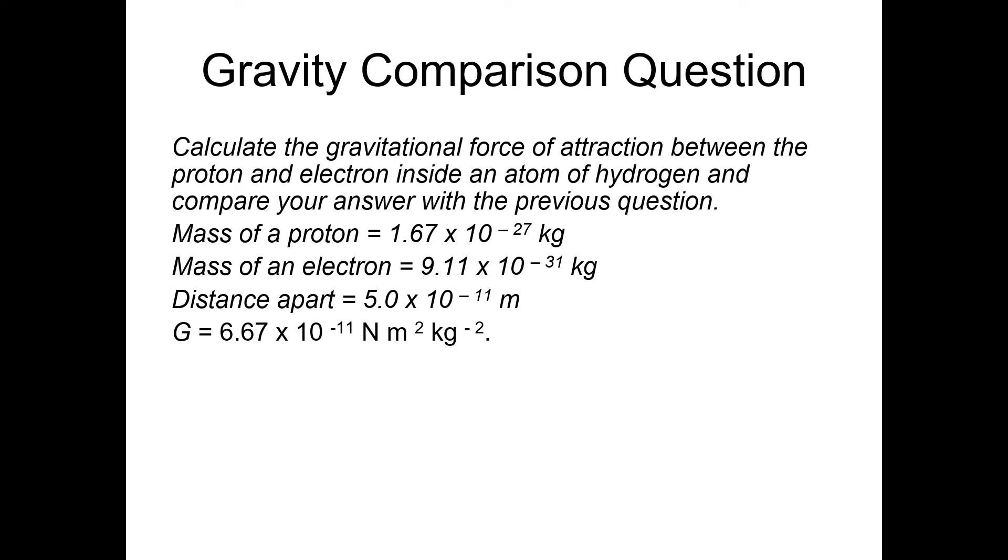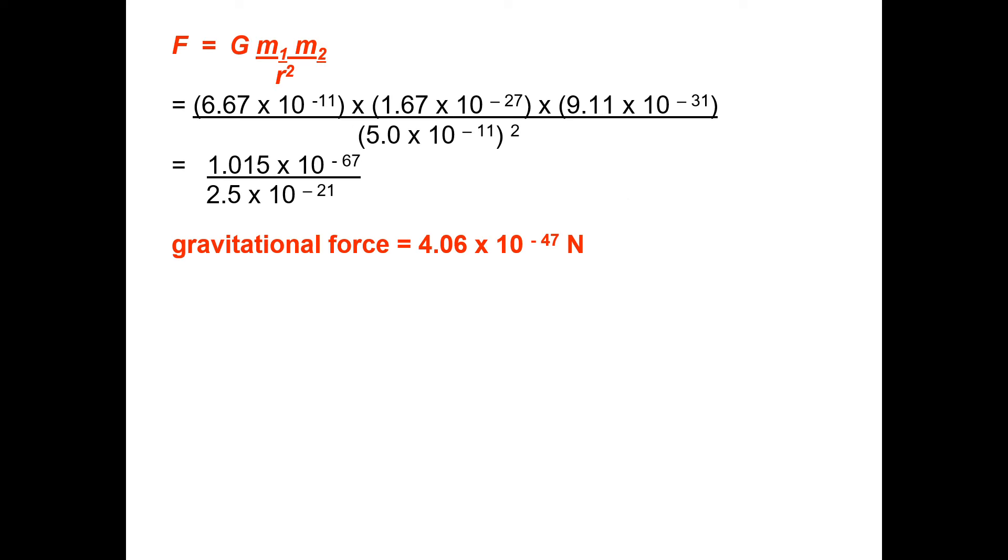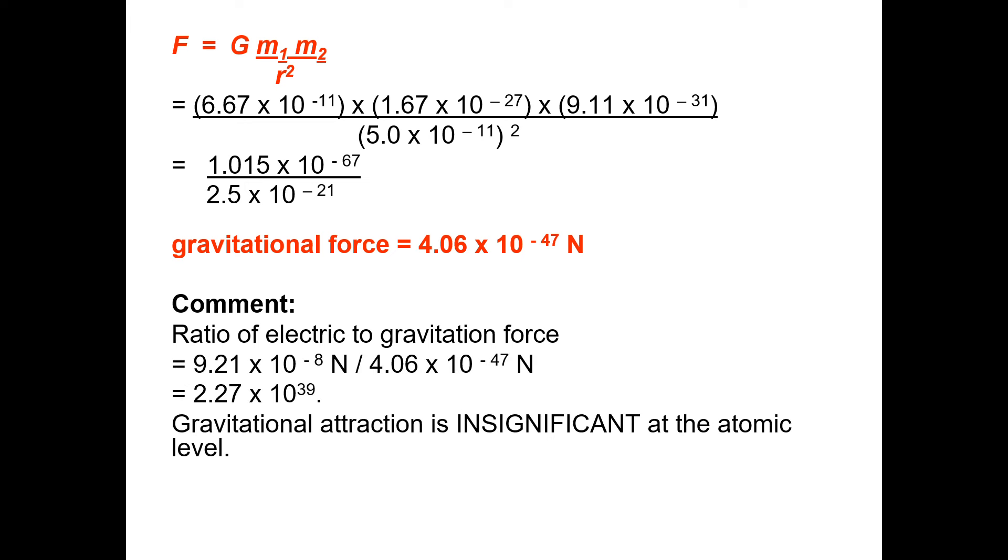The whole of that constant can sometimes just be called k, especially when you're doing algebraic manipulation. The k's might cancel, for instance. If you compare the gravitational force between an electron and a proton, compared to the previous answer for the electric force, you get an answer of 10 to the minus 47, really tiny. The ratio is roughly 10 to the 39 difference. So gravitational attraction is insignificant at the atomic level. This helps explain why we don't consider gravity when studying particle physics.